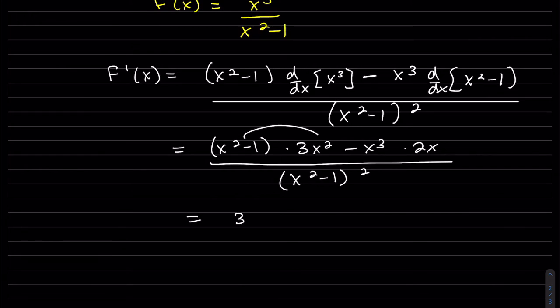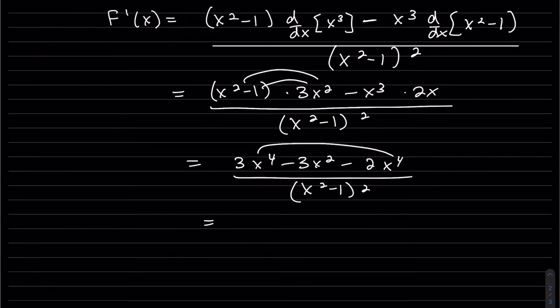I'll go ahead and multiply these and then try to clean it up. This is 2x to the 4. We'll factor out that x squared, but nothing else simplifies.